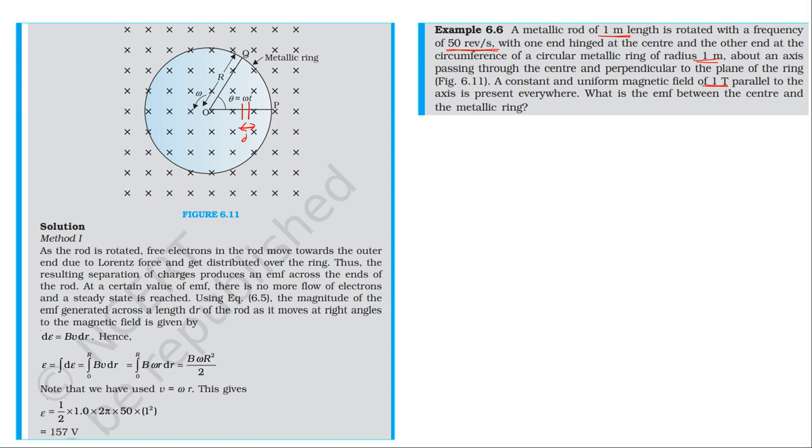Consider a small part of length dR. The EMF in this small element dE is equal to the magnetic field B into R omega into dR. So for the small EMF dE, we use this formula. Integrating the small EMF, dE equals B omega R dR.